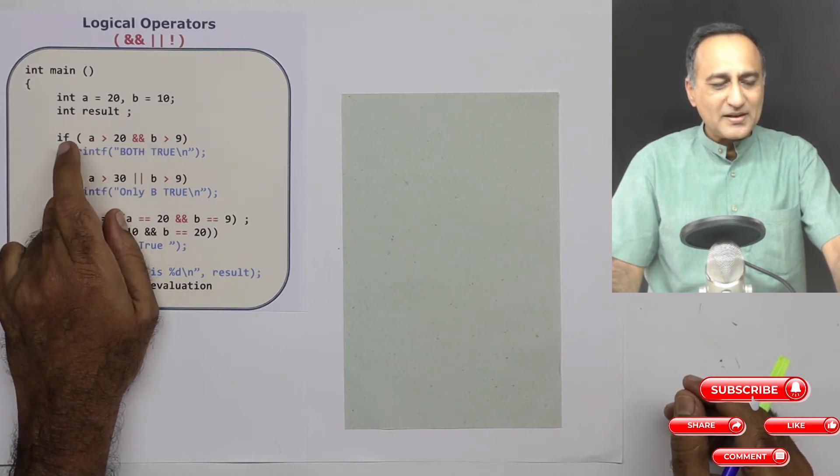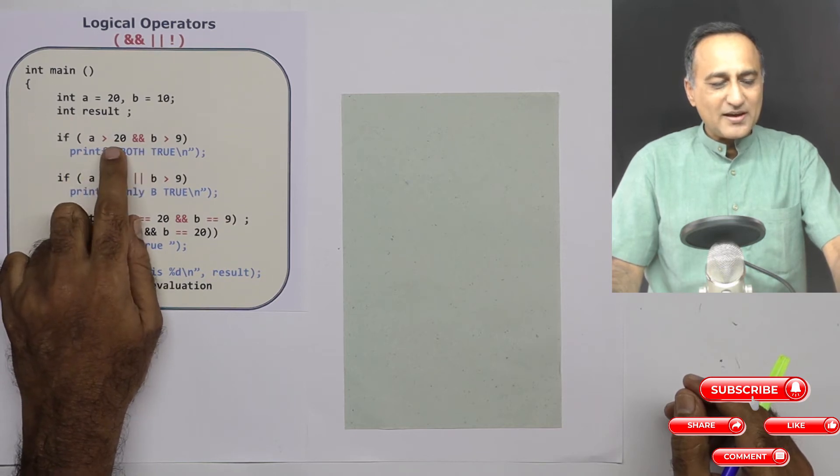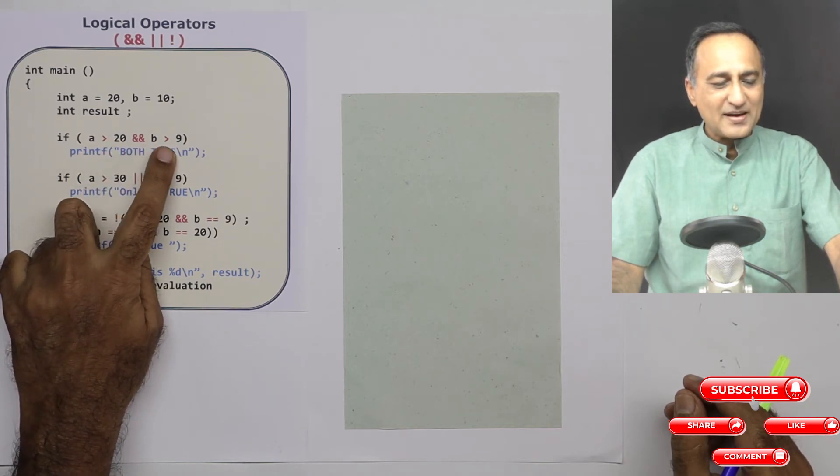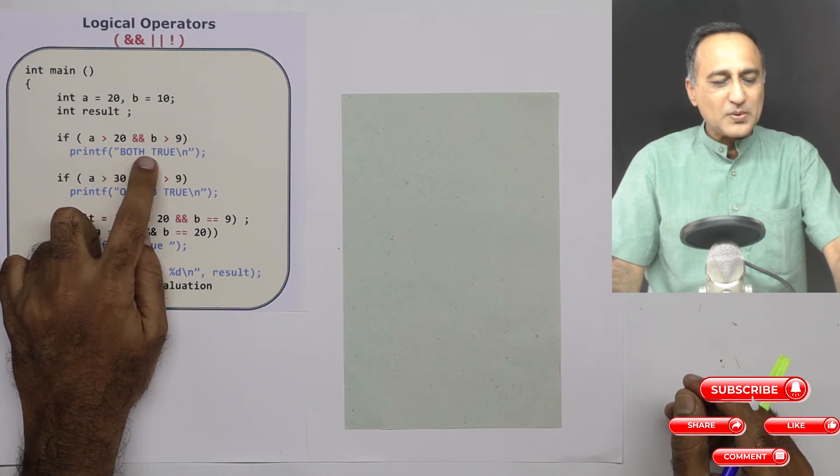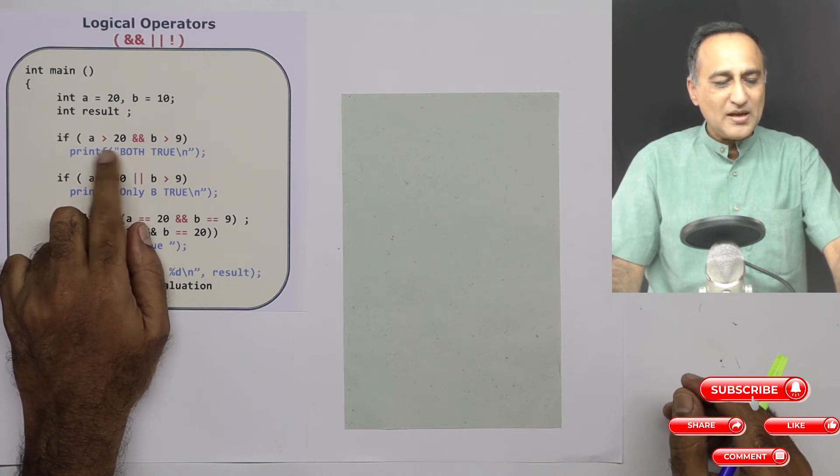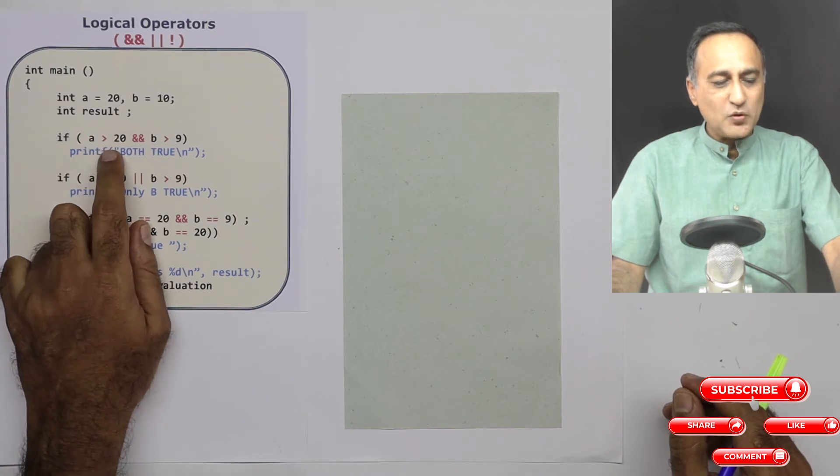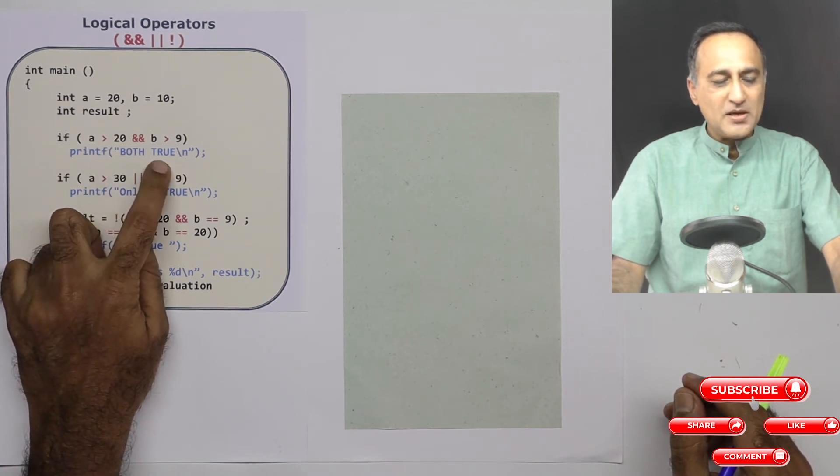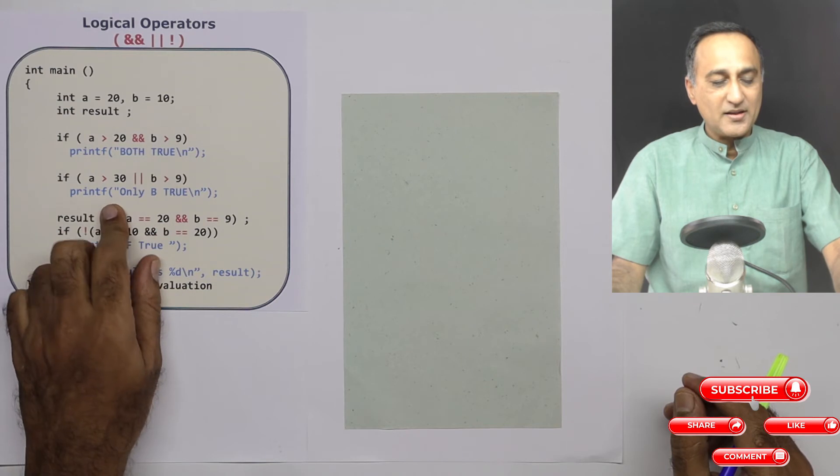So now if I print this condition, if A greater than 20 and B greater than 9, here it will not print this particular statement. So A is not greater than 20 because A is equal to 20. So this statement is not going to be printed, although B is greater than 9.